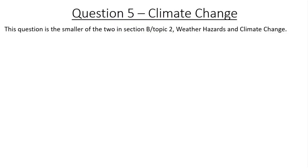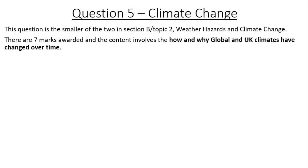This topic, Topic 2, has two main sections: Question 5 and Question 6. Question 5 is a short part of the topic which relates to climate change specifically. There are seven marks out of the 30 overall awarded for this section, so they're going to be low-stakes or small questions. It's really focused on how and why global and UK climates have changed over time.